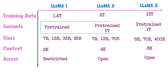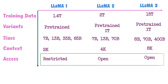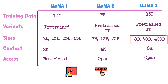In the case of Llama 1, only the pre-trained LLM is released. However, in the case of Llama 2 and Llama 3, both pre-trained and instruction-tuned LLMs are released. The access to Llama 1 is restricted to researchers, while Llama 2 and Llama 3 are accessible to everyone, with some limitations. For Llama 3, only the 8 billion and 70 billion models are released currently; the 400 billion model will be released in the future.